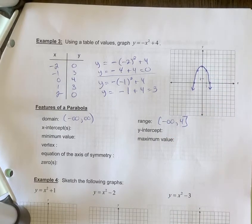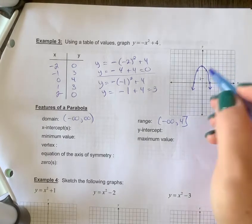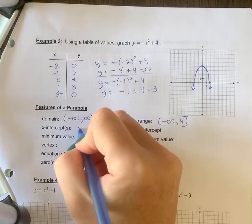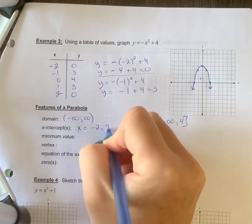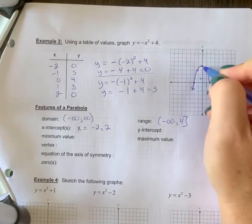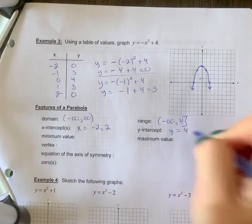You can also say y is less than or equal to 4 if you used set notation. The x-intercepts cross at negative 2 and positive 2. So x equals negative 2, 2, or you can write it as plus or minus 2. The y-intercept is at 4. So y equals 4.